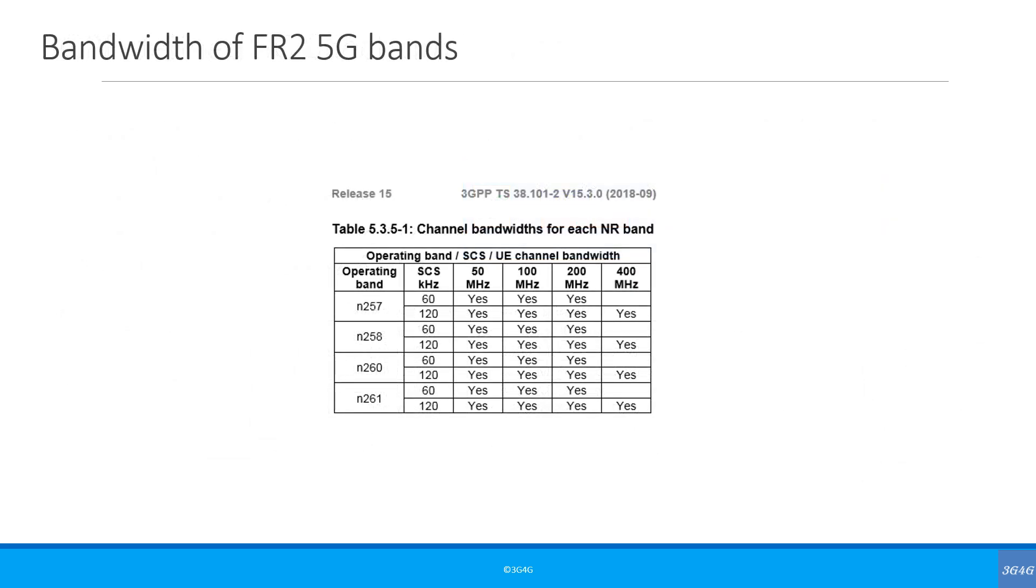For the new FR2 bands, generally referred to as millimeter wave bands, they can have bandwidths of 50, 100, 200, and 400 MHz.